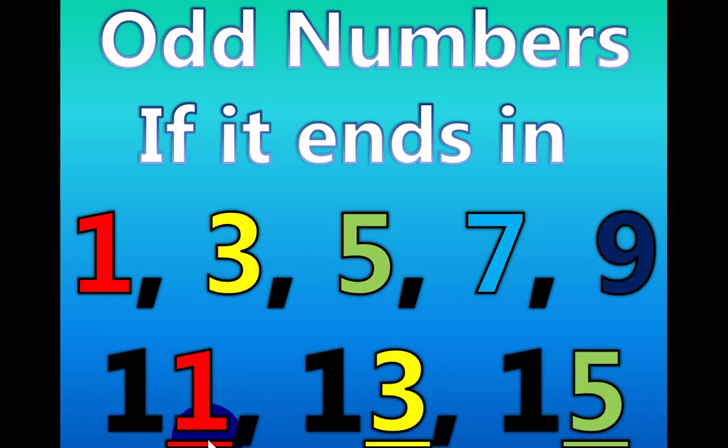11 is an odd number because it ends in a 1. 13 is an odd number because it ends in a 3. 15 is an odd number because it ends in a 5. Are you ready to practice odd numbers on the 100s chart? Ready?